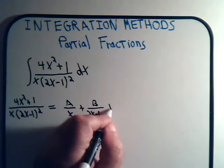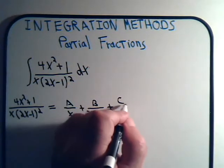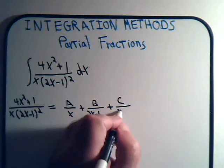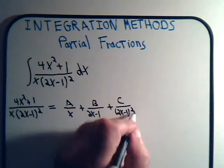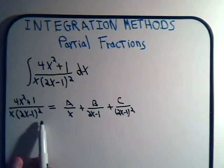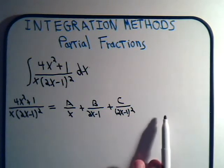But the linear term is squared, so remember from the introduction video, that would be a different constant yet over that linear constant squared. And if this was cubed, we would have yet another constant over that quantity cubed.